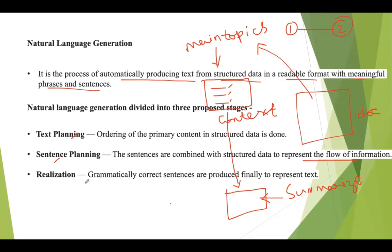The third step is realization, where various grammatical rules are applied to this summarization in order to generate grammatically correct sentences. After that, the final output is generated based on the template selected by the user. All the sentences are generated in the form of text, and that format should be according to the template selected by the programmer or user. This completes the process of natural language generation.